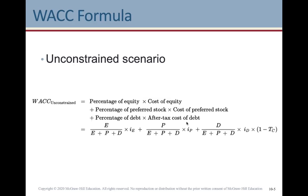The second term, P over (E + P + D) times iP, gives the cost of preferred stock. The final term in the formula is for determining the cost of debt: D over (E + P + D) times the cost of debt, multiplied by (1 minus the tax rate) for the corporate tax rate.